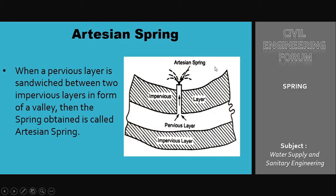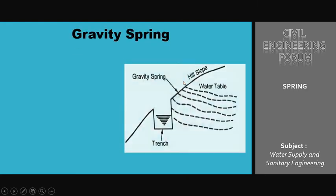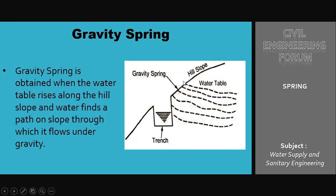Not all the water accumulated near a valley comes from rain — sometimes it is also obtained from an artesian spring. The second type is the gravity spring. A gravity spring is obtained when the water table rises along a hill slope and water finds a path on the slope through which it flows under gravity. In the rainy season, the water table rises on the hilly slope and may come outside the hill, flowing downward due to gravity — this becomes a gravity spring.